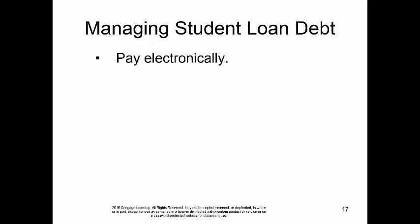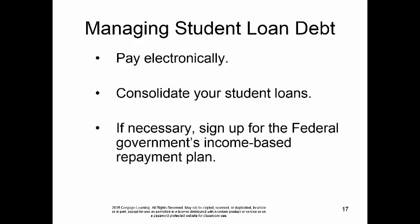You can pay electronically — set it up for automatic payment on a monthly basis, on or before its due date. You can also consolidate your student loans. There are various companies, including a company called SoFi, that may offer you a lower rate. If your federal student loans are not subsidized and you're paying 6.8%, SoFi might offer a lower rate on a consolidation loan. If necessary, you can also sign up for the federal government's income-based repayment plan.